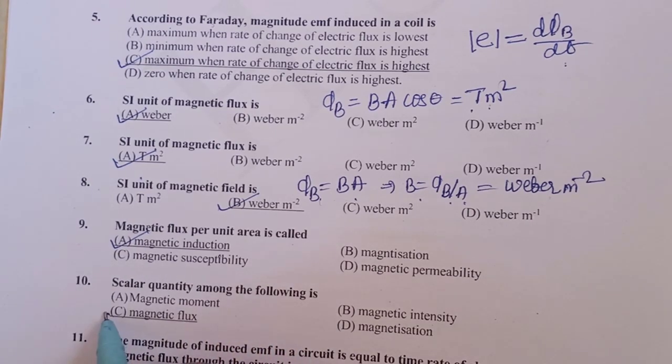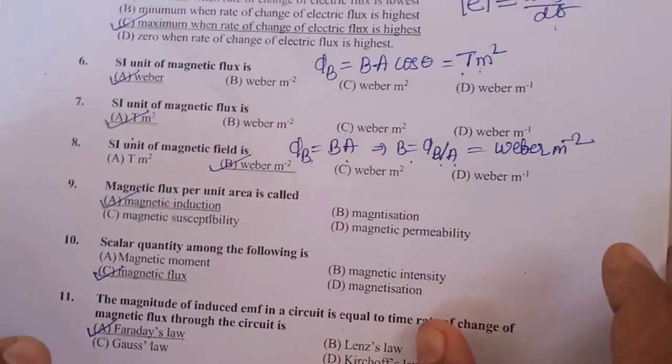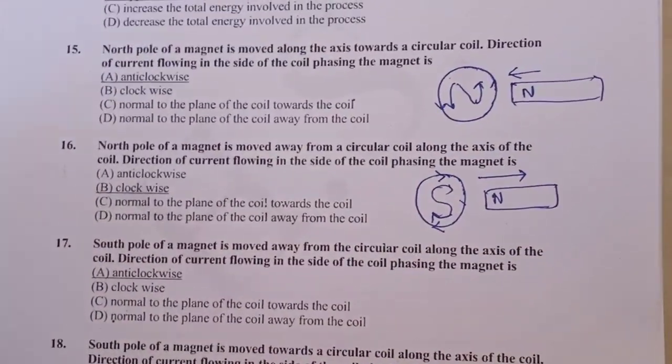Scalar quantity among the following is magnetic flux. Magnitude of induced EMF in a circuit is equal to time rate of change of magnetic flux through the circuit. This is given by Faraday's law. That is E is equal to dΦ by dt.